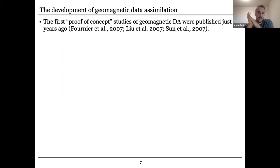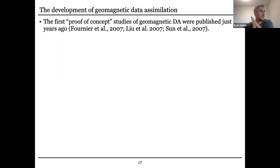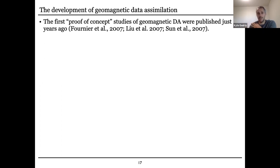The idea of doing this is relatively new compared to a lot of other applications of data assimilation. People doing data assimilation with the geodynamo model form a small, young community. The first proof-of-concept studies showed up just 14 years ago, and most of those — actually two of them — just used very simplified one-dimensional proxy models of the geodynamo. One used a dynamo model but with just synthetic data experiments.